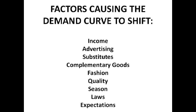Then you have inferior goods, which are goods for which there is a rise in demand as income falls — for example, buses. When incomes fall, less people can afford to own cars and pay for petrol, so instead they get the bus. So when incomes fall, demand for buses goes up because buses are inferior goods. As incomes fall, demand for inferior goods rises, so there is a right shift in the demand curve.